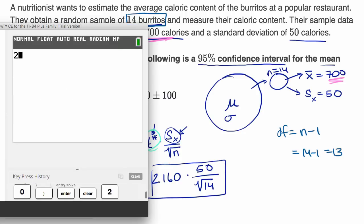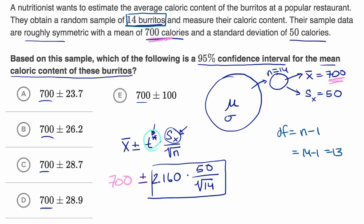Okay, 2.16, I could write a zero there, it doesn't really matter, times 50 divided by the square root of 14. Square root of 14. We get a little bit of a drum roll here. 28.86. So this part right over here is approximately 28.86. That's our margin of error.